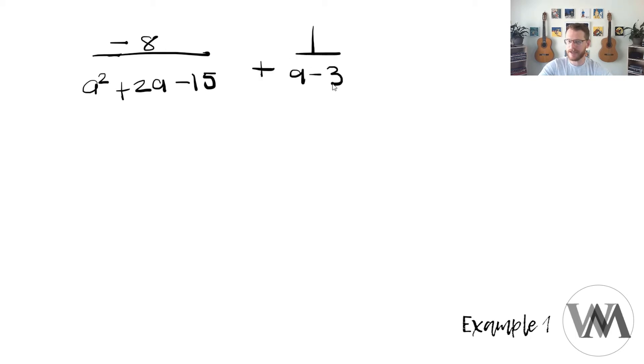Let's have a look at two examples. These two examples might benefit you in order to understand the process a little bit better when using or working with factors. Our first example will be -8 over a squared plus 2a minus 15 plus 1 over a minus 3.